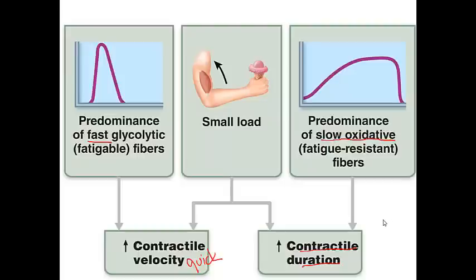As for contractile duration, that occurs with slow oxidative fibers — fibers that contract for a long period of time and are resistant to fatigue. However, they do not have the quick velocity seen in fast glycolytic fibers. The mix of the two would offer a little bit of both — some velocity and some duration.